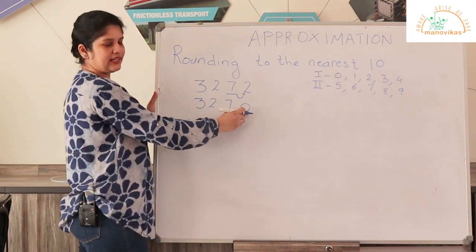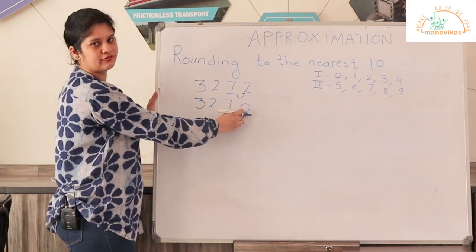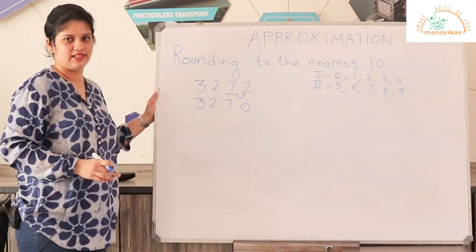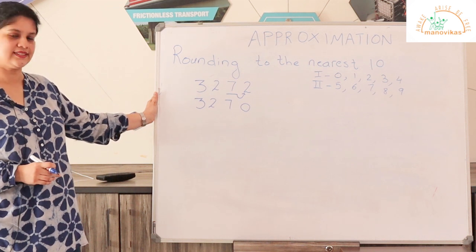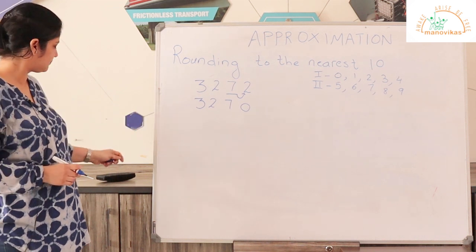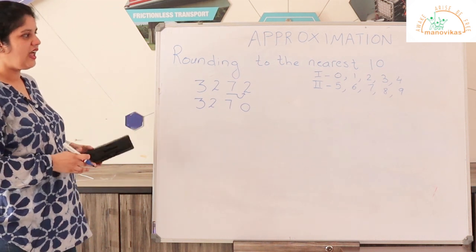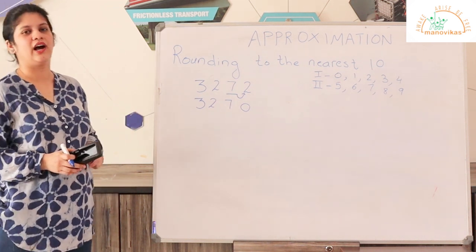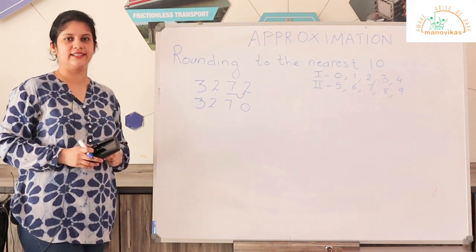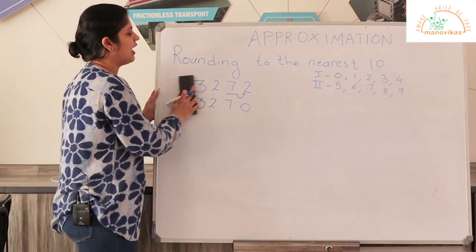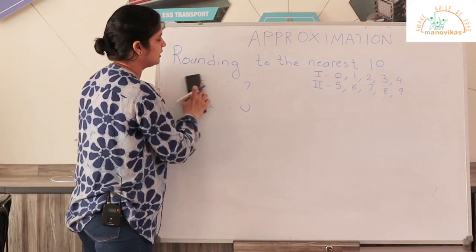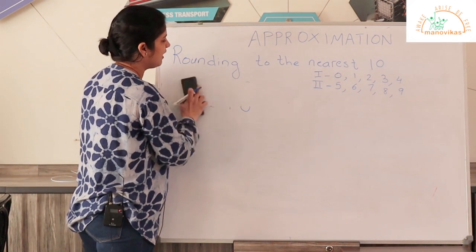Remember that after the tens place you have to follow with a 0, because you are rounding to the nearest 10. Having understood how to round to the nearest 10, let us now learn how to round to the nearest 100.